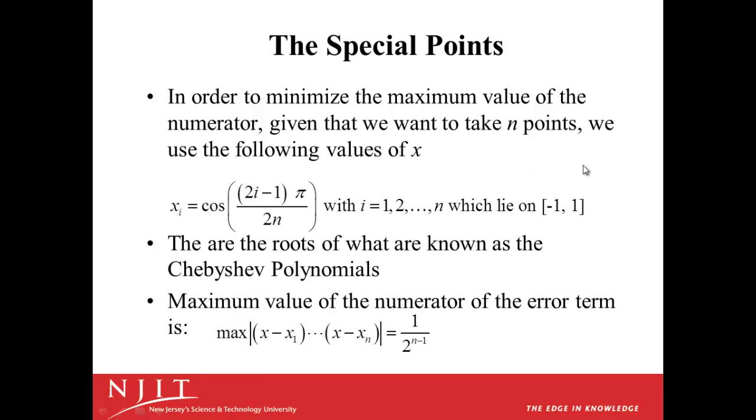So what are these special points that we're using? Well, in order to minimize the maximum value of the numerator, that's the piece that we have control over, given that we want to take n points, we will use the following values. These are the values that are the roots of the Chebyshev polynomials. The x values are cosine of (2i minus 1) times pi over 2n, where i is 1, 2, 3, and so forth, up to n. And we notice that the x values will lie on minus 1 to 1.